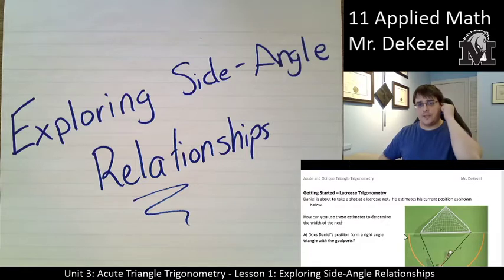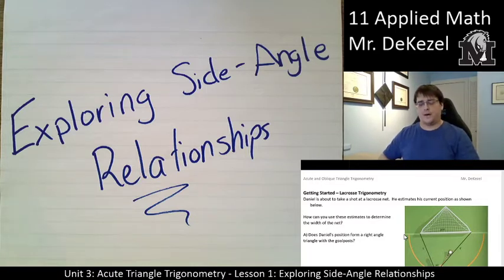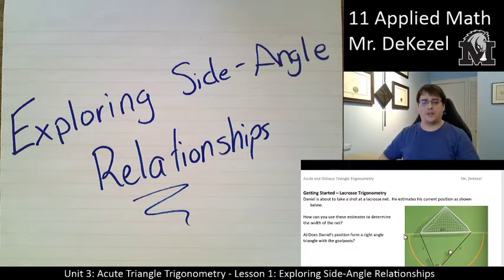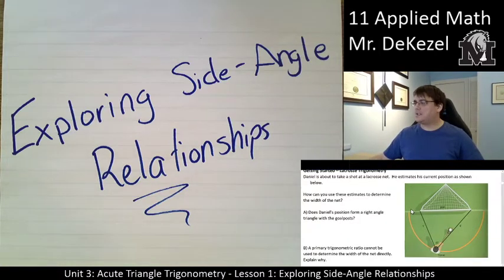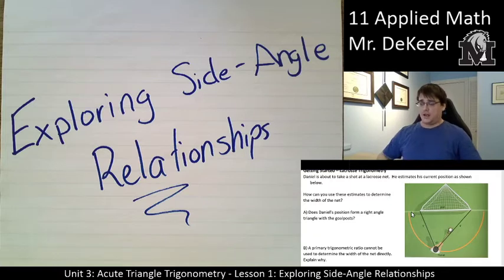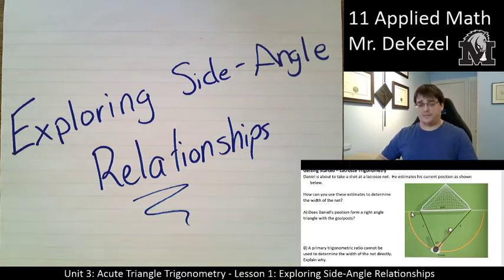What we're going to do today is solve a problem using our old methods — the methods reviewed from grade 10 math where we used SOHCAHTOA: sine, cos, and tan. We're going to show how difficult it can be when we don't have the right circumstances, and then show a way to more easily solve that problem using a newer formula that we'll use in future lessons. So let's start talking about Daniel. Daniel is about to take a shot at a lacrosse net. He estimates his current position as shown. We don't have a right angle, so we can't use sine, cos, and tan right now.